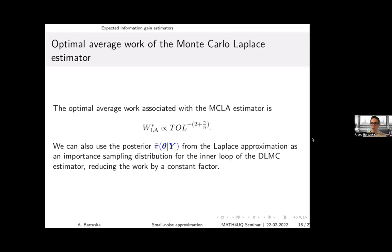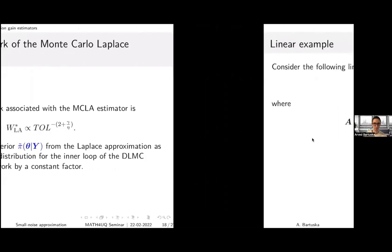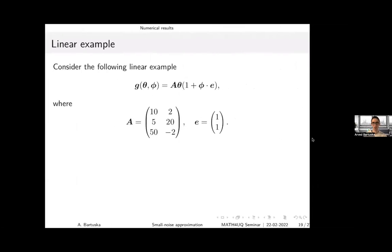We can also use the posterior approximation for importance sampling in the inner loop of the double loop estimator. Importance sampling means sampling from a different distribution and applying a correction to preserve the correct mean — keeping the estimator unbiased but reducing variance. This reduces the constant factor in the number of samples, which can still be significant even though the asymptotic order is unchanged.